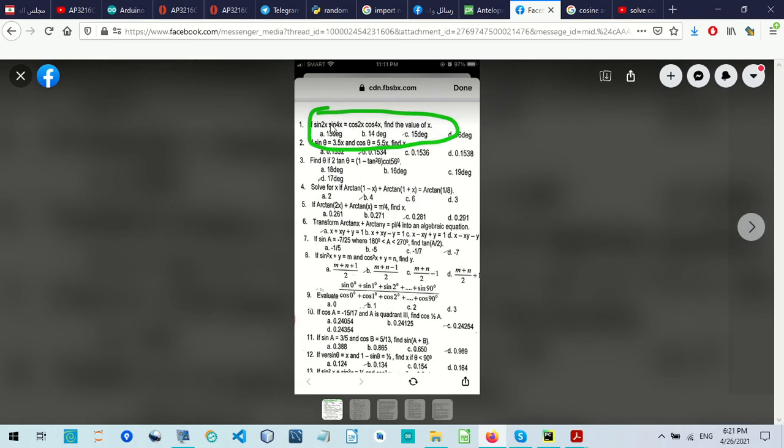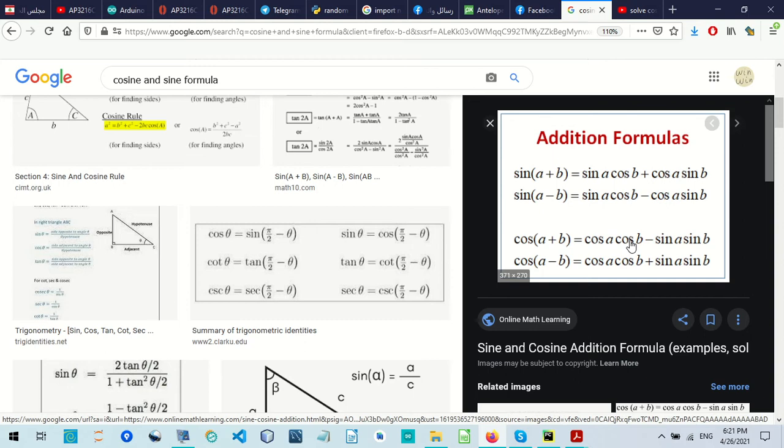So it becomes cos(2x) times cos(4x) minus sin(2x) times sin(4x) equals zero. Looking here, cos(a)cos(b) minus sin(a)sin(b), this becomes cos(2x + 4x), so cos(6x). Cos(6x) equals zero.